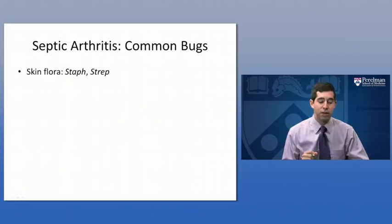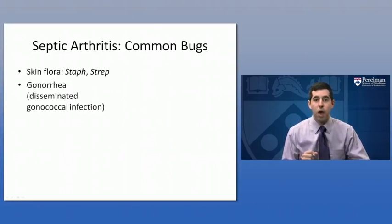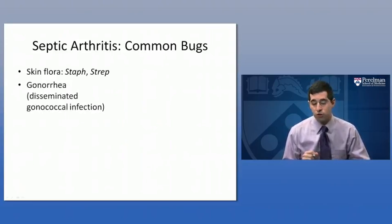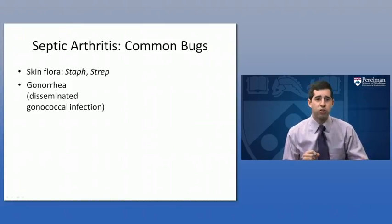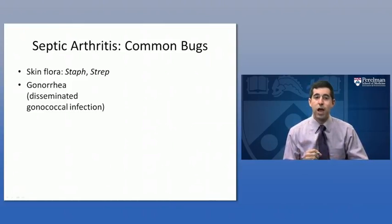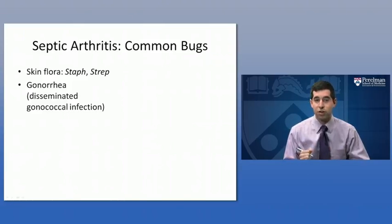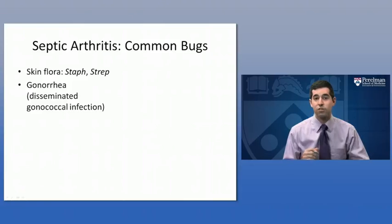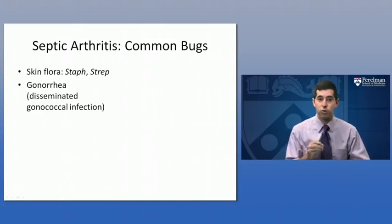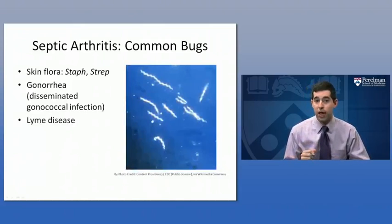Some of the common bugs include the skin flora — staph and strep. Also common is gonorrhea, the sexually transmitted infection, in what's called disseminated gonococcal infection. Usually someone acquires the STI, and if left untreated, the gonorrhea is able to travel to other places in the body and seed joints. Disseminated gonococcal infection is usually described as a migratory polyarthritis — different joints being affected as it moves from one joint to another. This is also seen in Lyme disease.